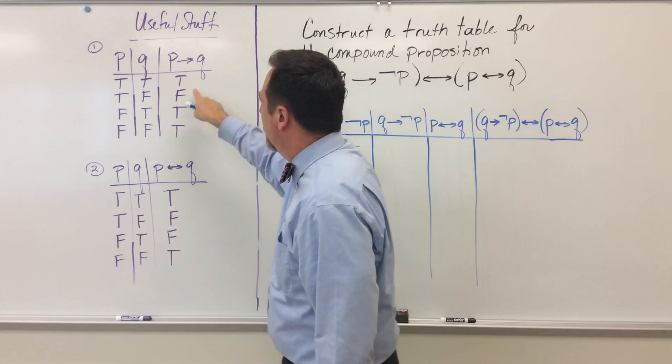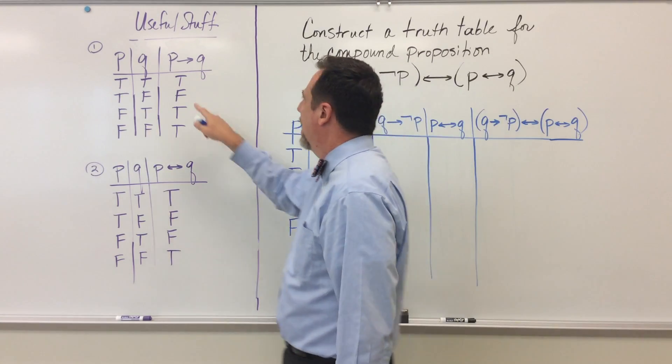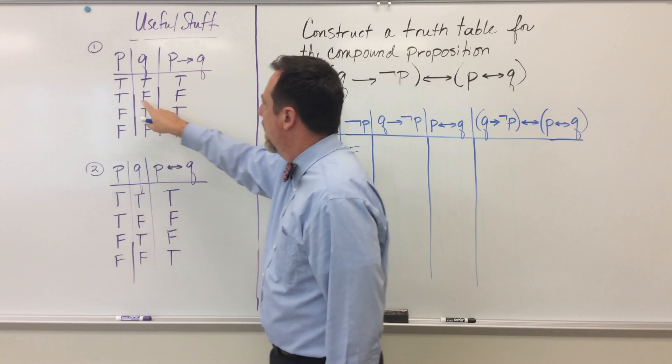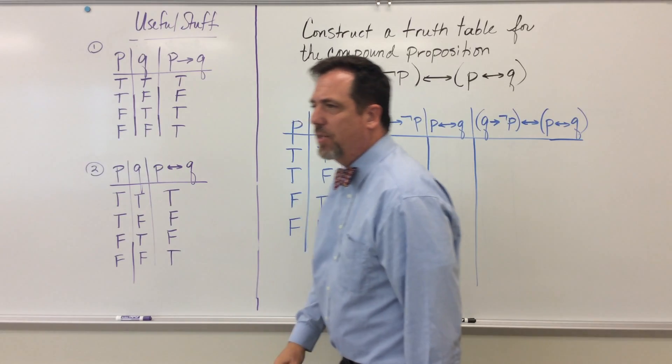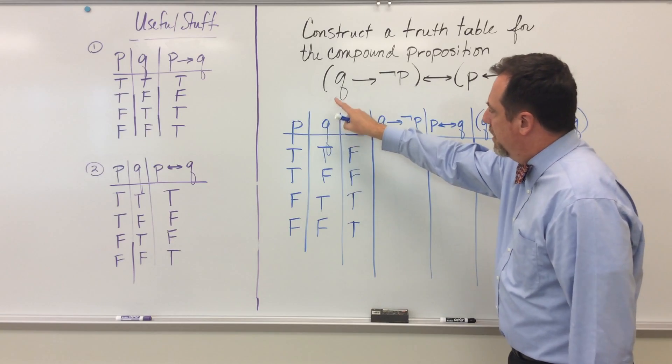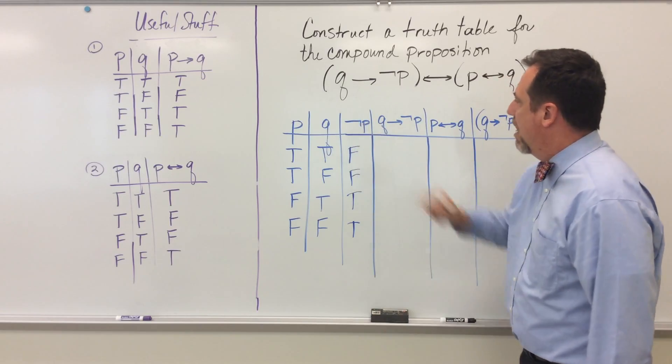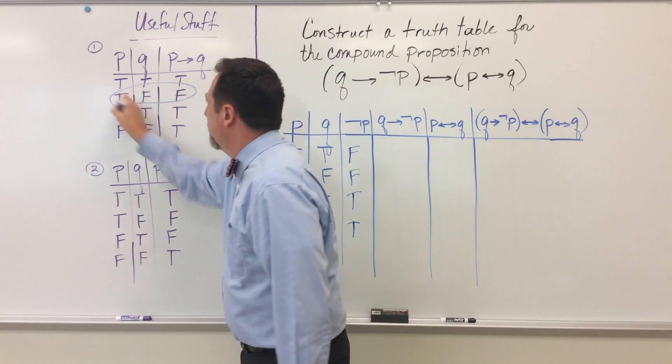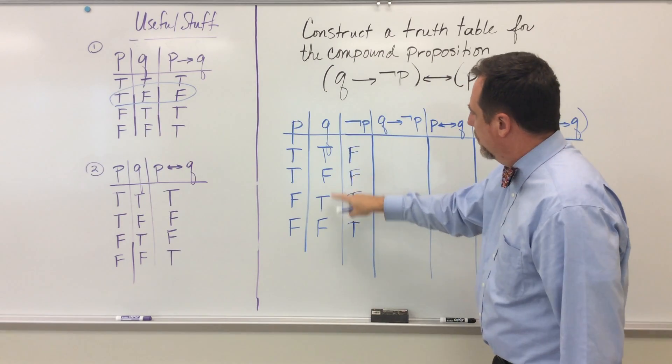And it turns out that in the conditional statement, the only time that that statement is false is when the premise is true and the conclusion is false. So the hypothesis is true and the conclusion is false. So that's really easy to sort of figure out because, look, I have the hypothesis here as Q, and then I have the conclusion here that's not P. So the only time that we have this case where the hypothesis is true and the conclusion is false is right here.